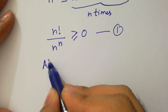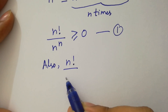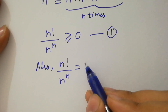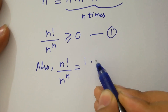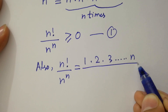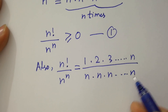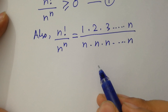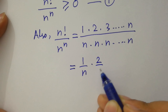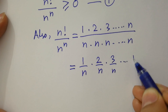Also, n factorial over n to the power n equals (1/n) · (2/n) · (3/n) · ... · (n/n), by writing out the product of 1, 2, 3, ..., n over n to the power n.